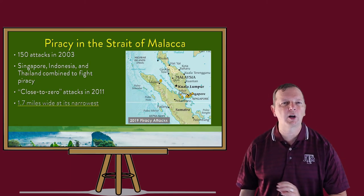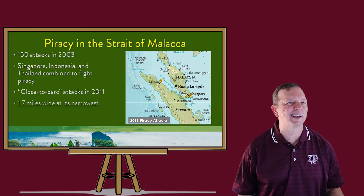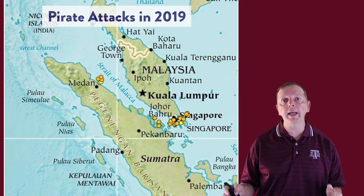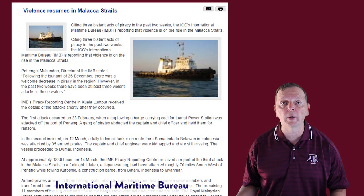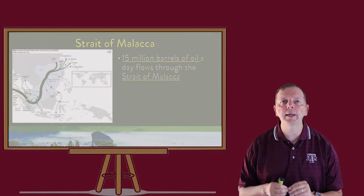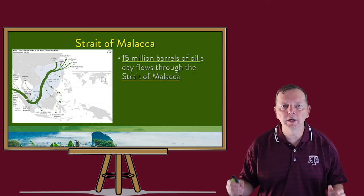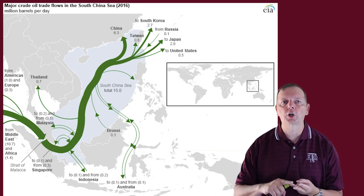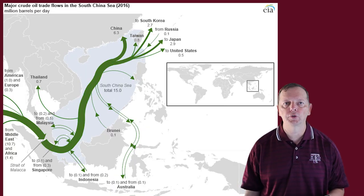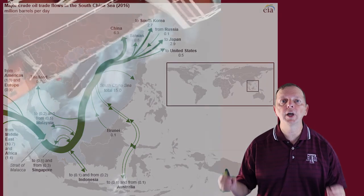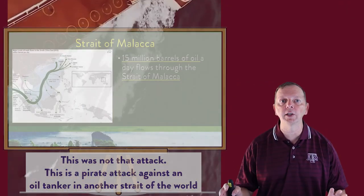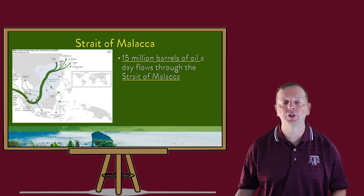They were able to reduce attacks down to what they called close to zero — which sounds kind of like not zero. Piracy has started to pick up again, with over 20 attacks in 2019, and just in the first three months of 2020, there have already been four attacks. Why is this important to us? Because 15 million barrels of oil a day flow through the Strait of Malacca. Nearly all of the oil that Japan, China, and Korea get from the Middle East must come through the Strait of Malacca. Just in March of 2020, a fully laden oil tanker was attacked by 35 armed pirates, and they kidnapped both the captain and its chief engineer.